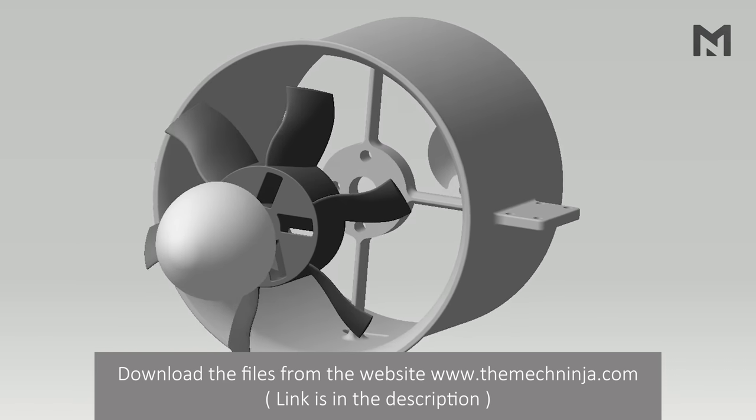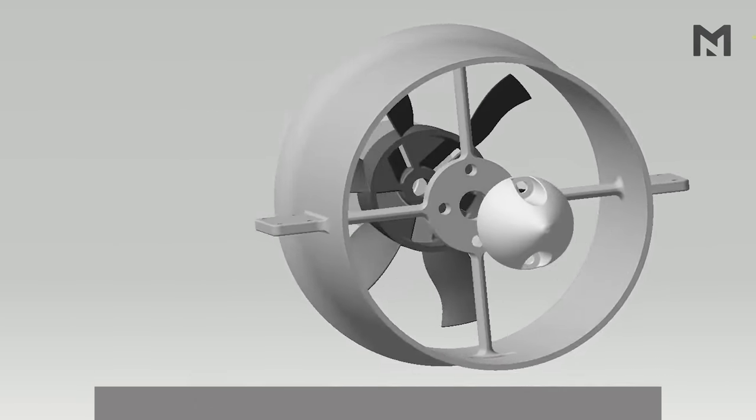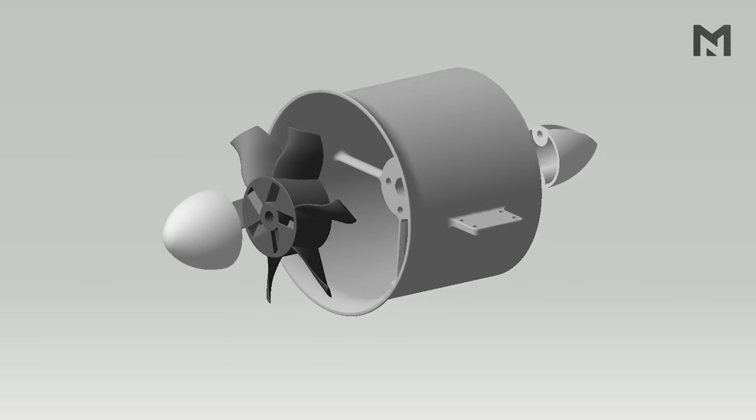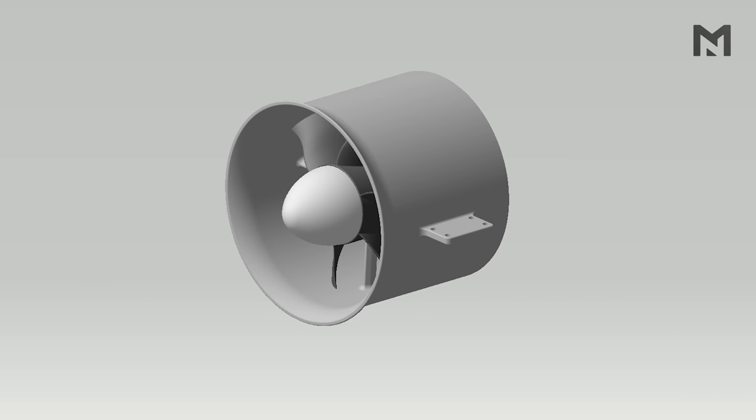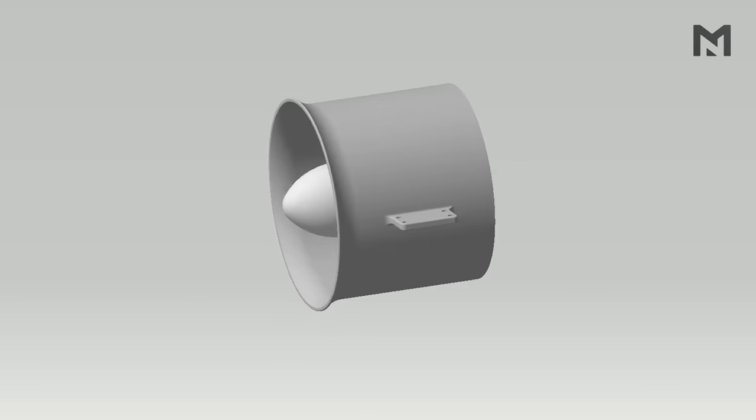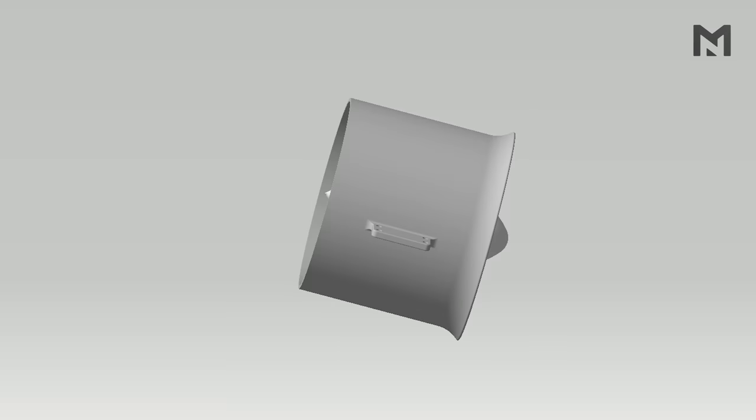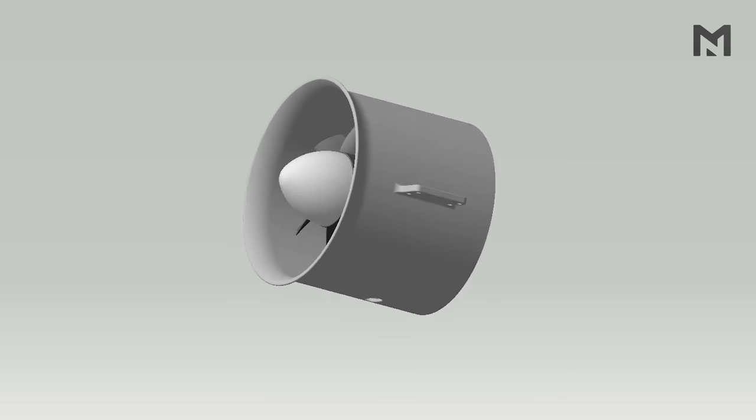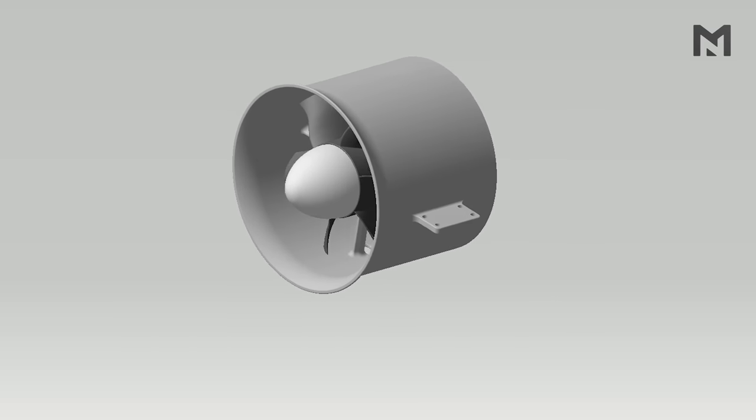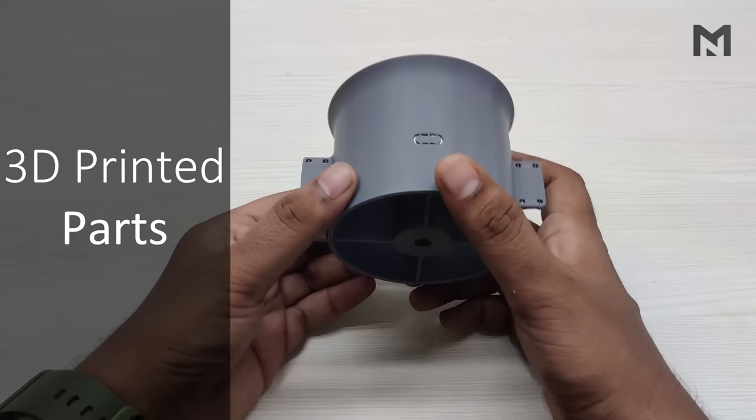All these parts are printable on any 3D printer. The propeller shown here has six blades, but I've also made two other propellers with 8 and 12 blades for testing. I've already 3D printed all the parts with a 0.2mm layer height and 30% infill, so let's begin with the assembly.